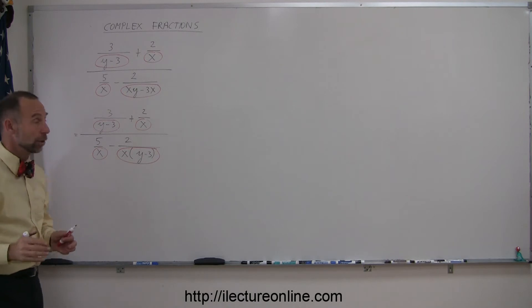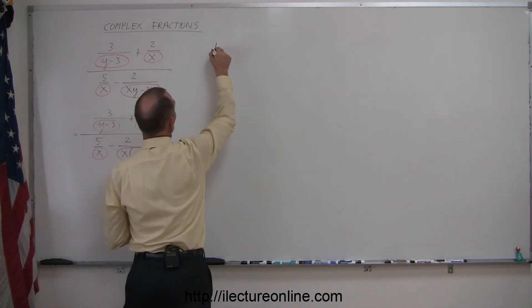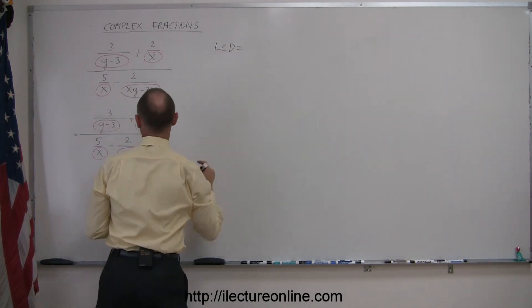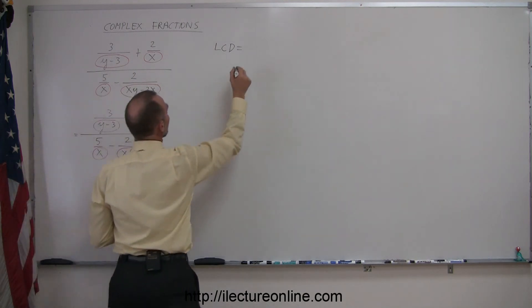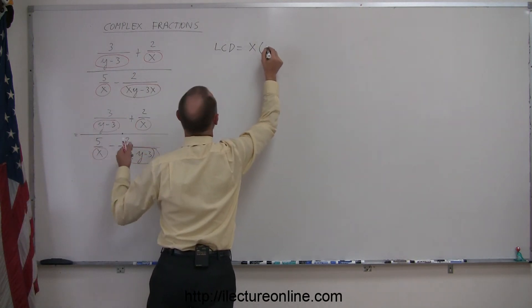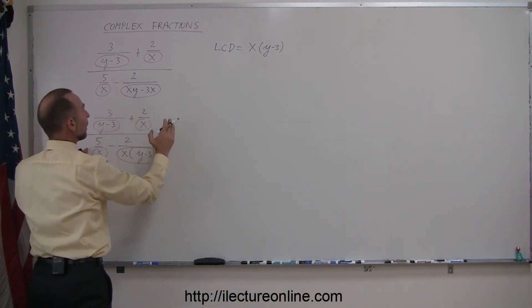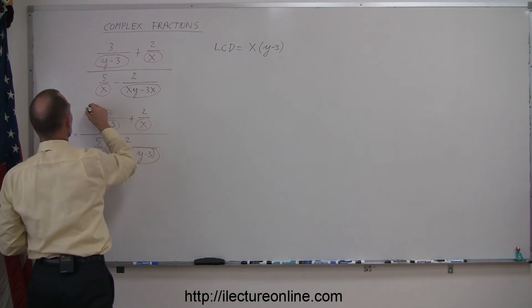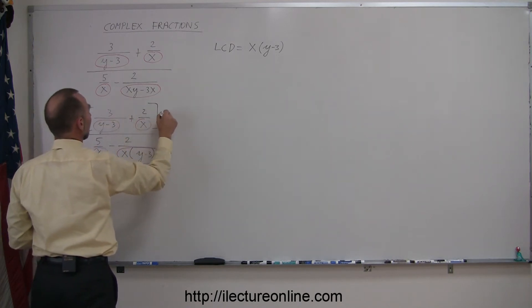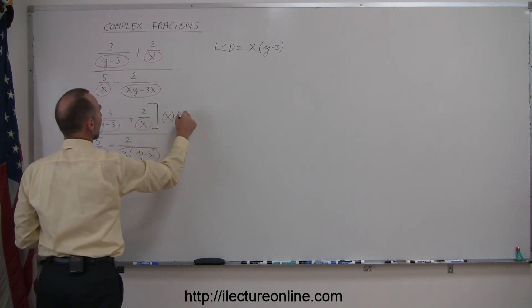So it looks like the lowest common denominator in this case is simply the product of x times (y minus 3), which means I'm going to multiply the numerator and the denominator by the lowest common denominator of x times (y minus 3).